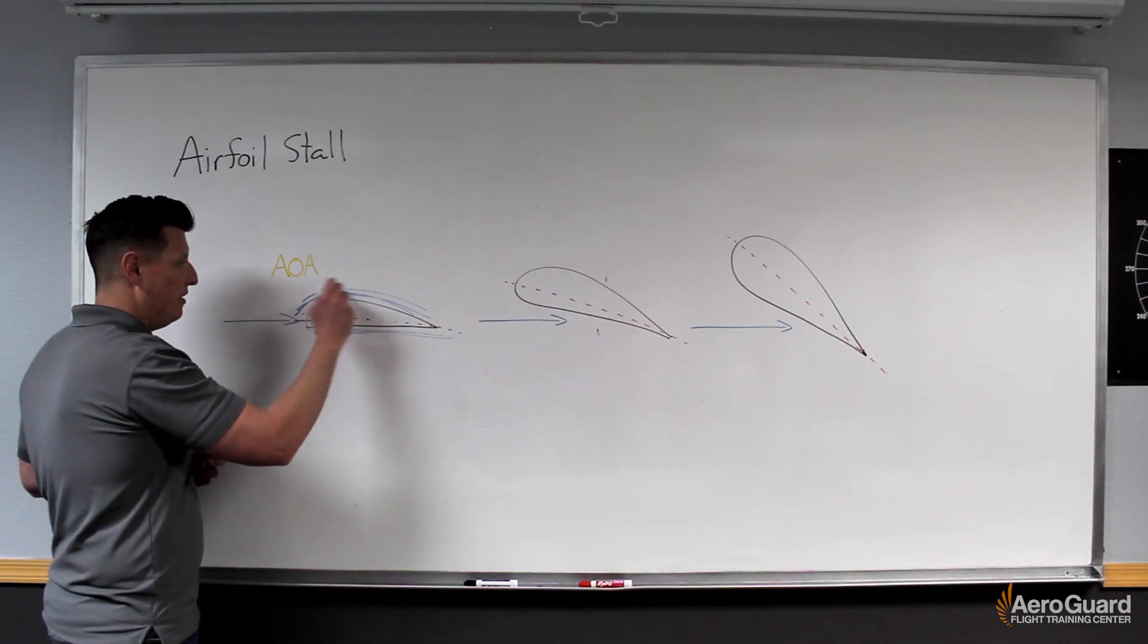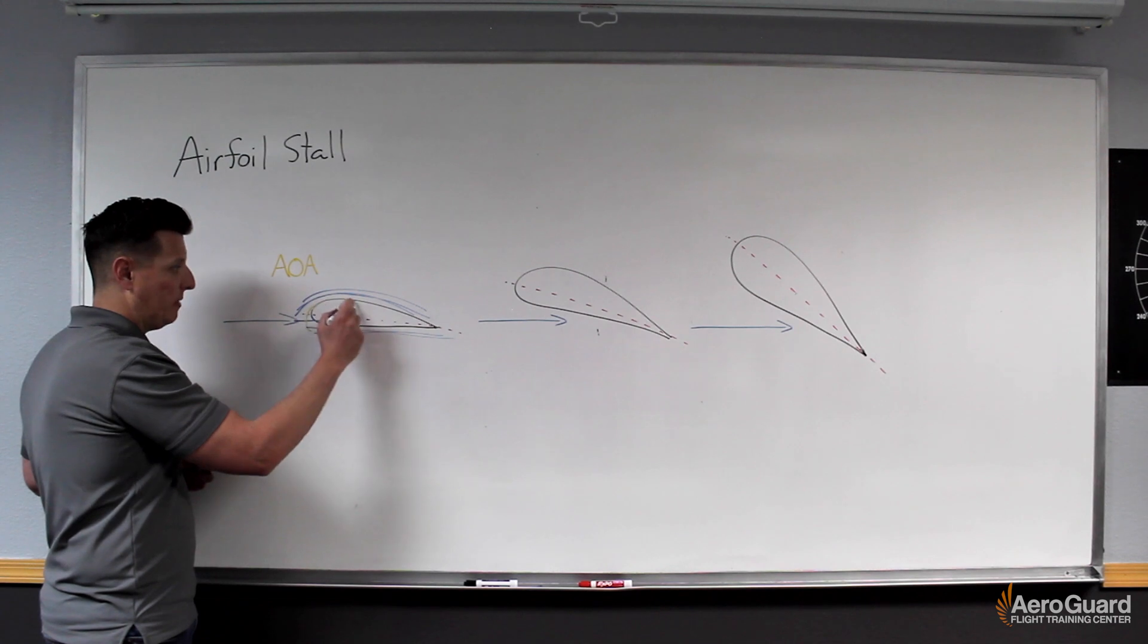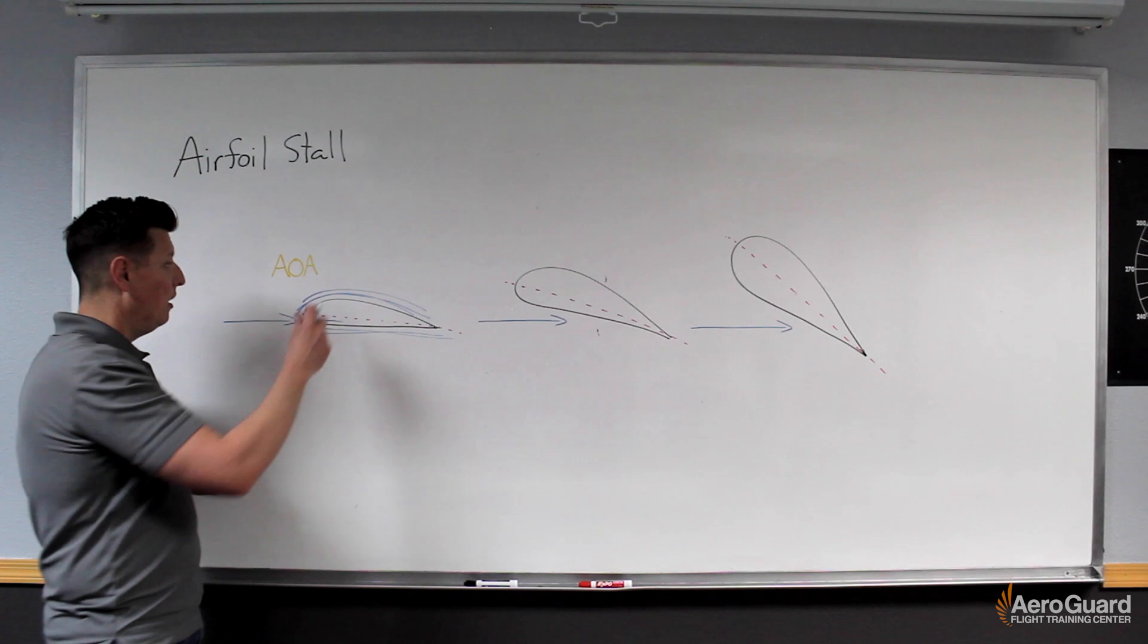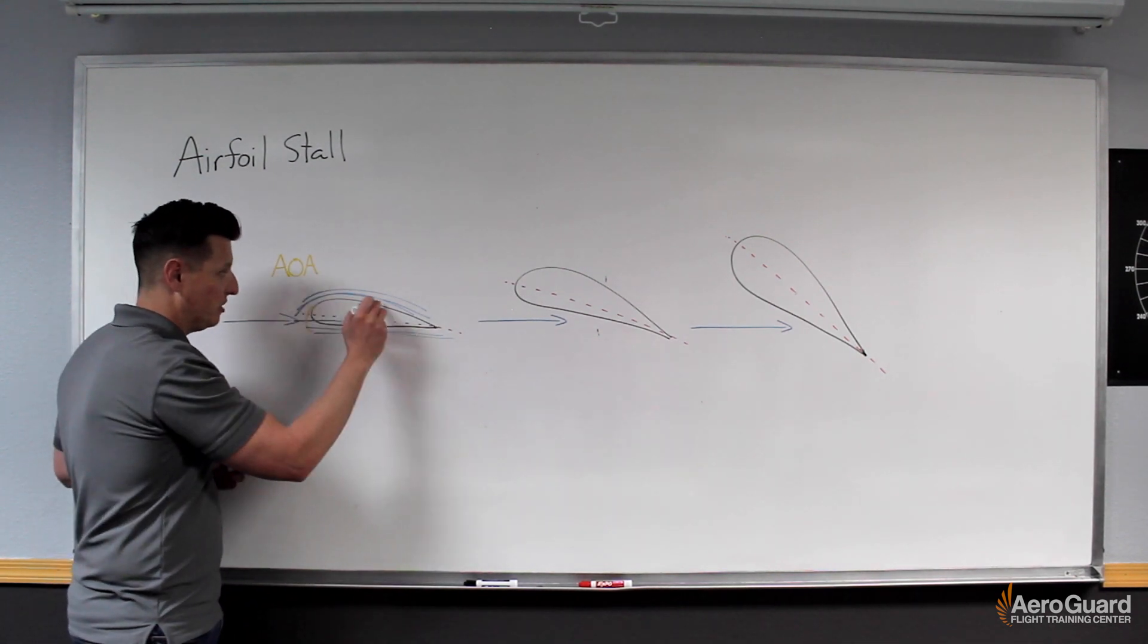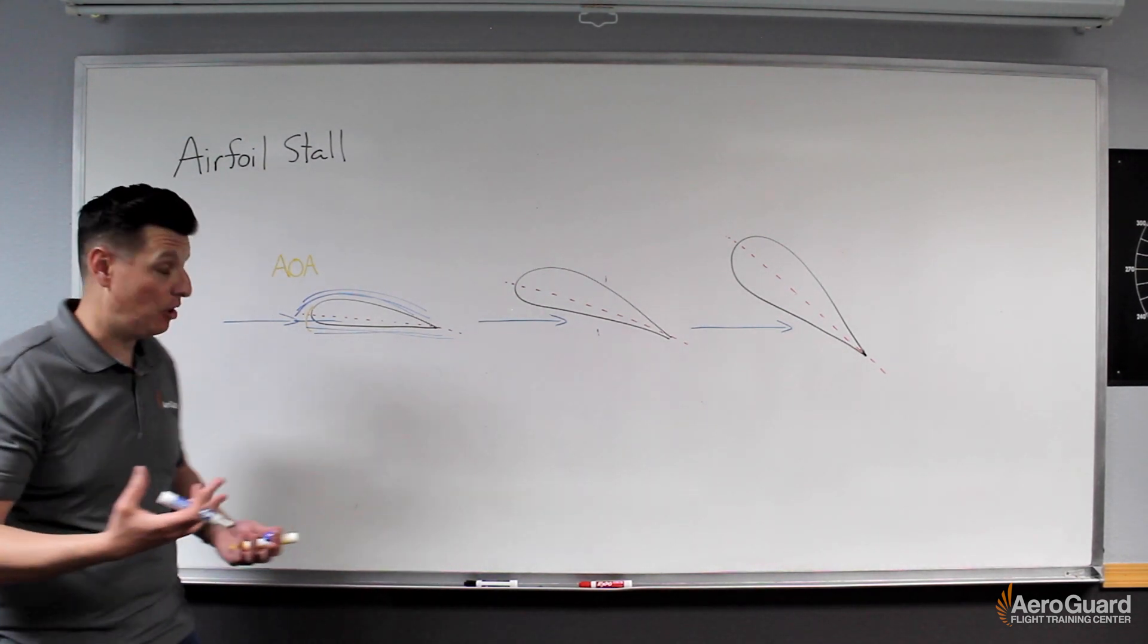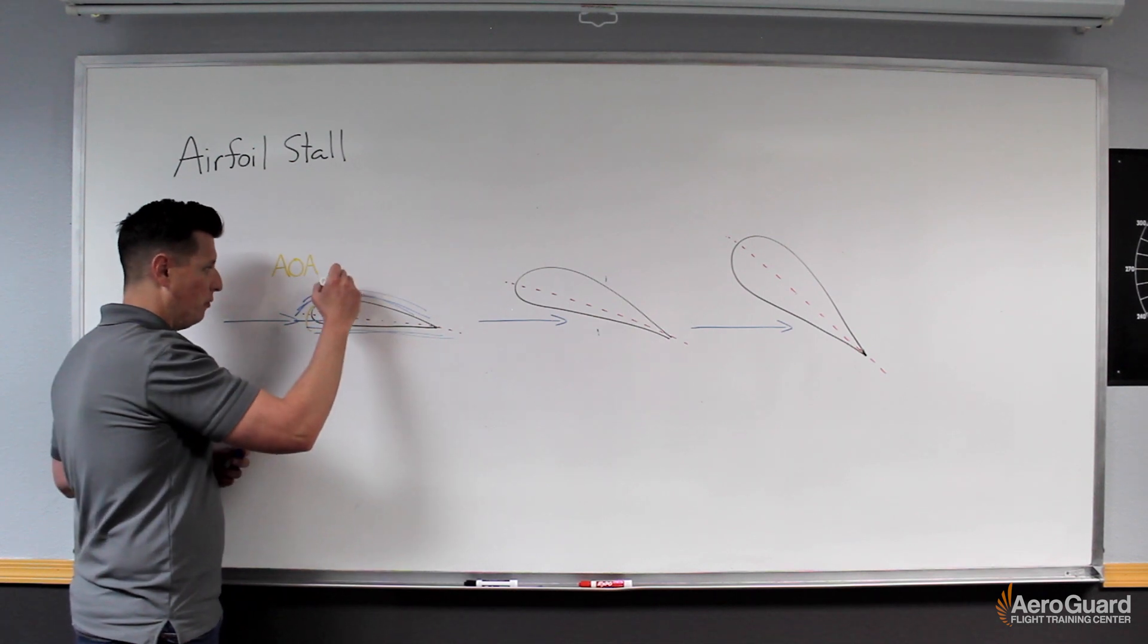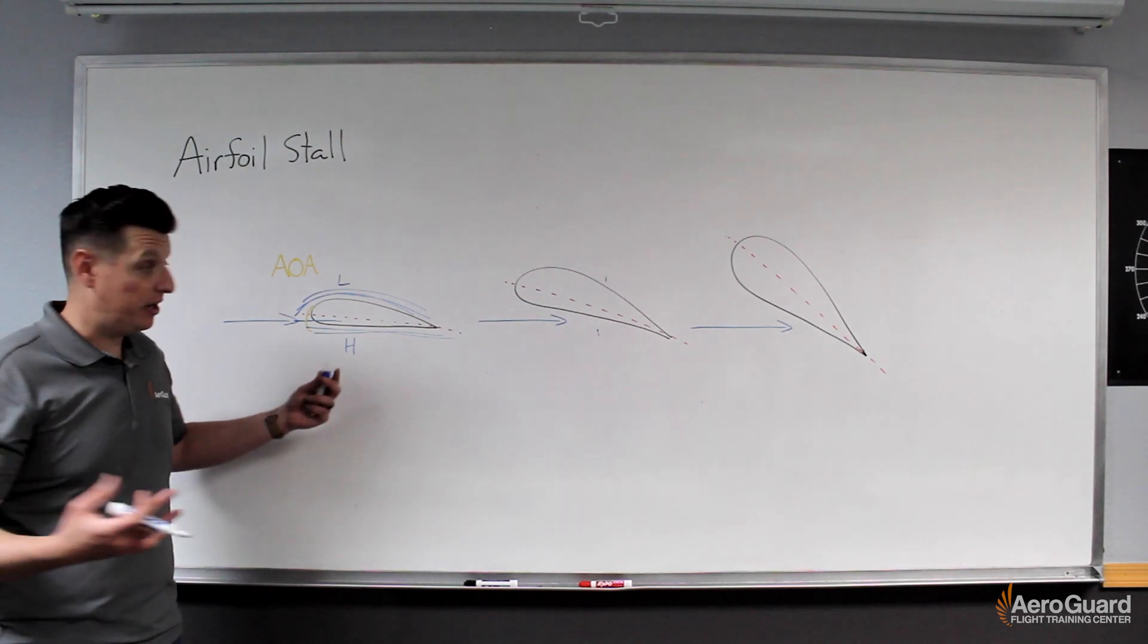What that means is this air creates a venturi effect between the top camber of this wing and the free-flowing air above it. That venturi effect causes this air to accelerate and results in a decrease in static pressure. This is where we get this concept of a relatively lower pressure above the wing and a relatively higher pressure below the wing.